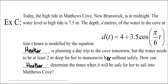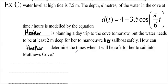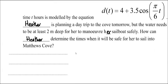So this one is going to be a word problem. Today, the high tide in Matthews Cove, New Brunswick, is at midnight. The water level at high tide is 7.5 meters. The depth is modeled by the equation that's given here. Heather's planning a day trip to the cove tomorrow, but the water needs to be at least 2 meters deep for her to maneuver her sailboat safely. So how can Heather determine the times when it will be safe for her to sail into Matthews Cove? So we're going to be solving 2 is less than or equal to the depth. But when you're doing a trigonometric inequality, we're actually going to solve 2 equals, and then we'll use the graph to help us figure out where exactly the answer is going to go.